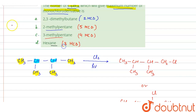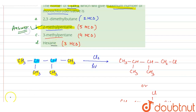So the maximum number of monochloro derivatives is obtained from 2-methylpentane, giving 5 derivatives. Therefore, option B is the answer. Thank you.